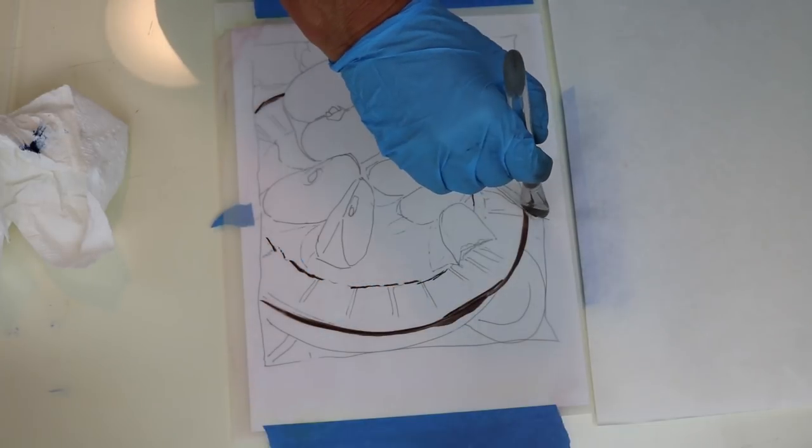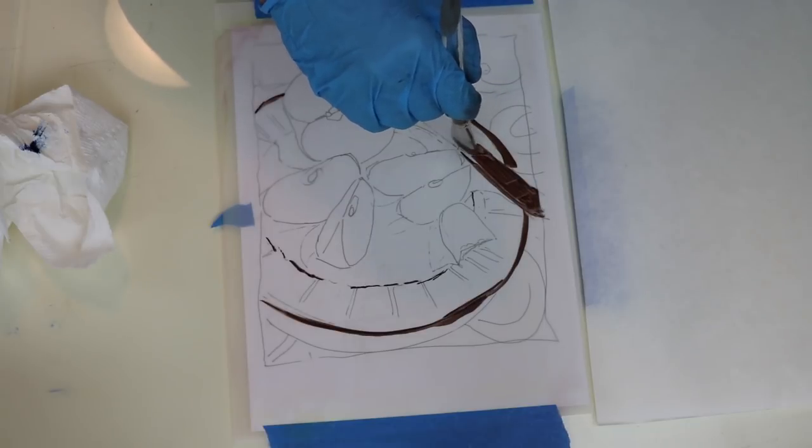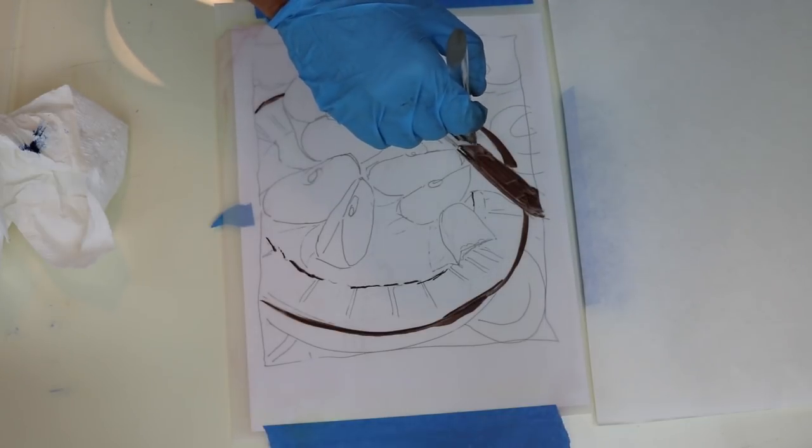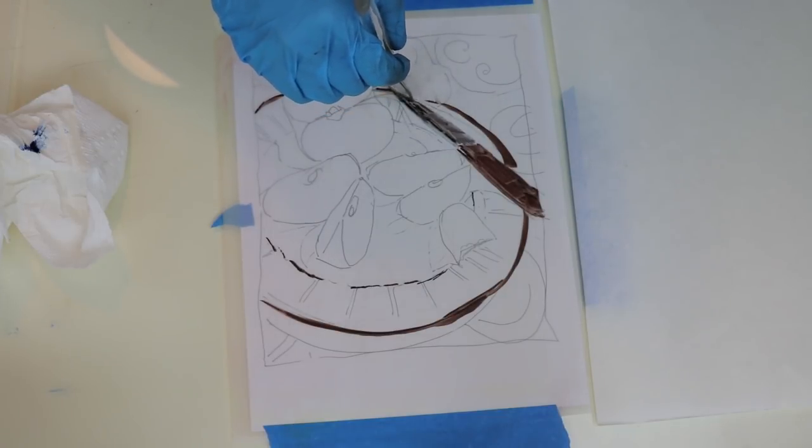Use your sketch underneath the duralar like a road map and lay in blocks of wet pigment. You can apply your pigments loosely because you have lots of options for editing.